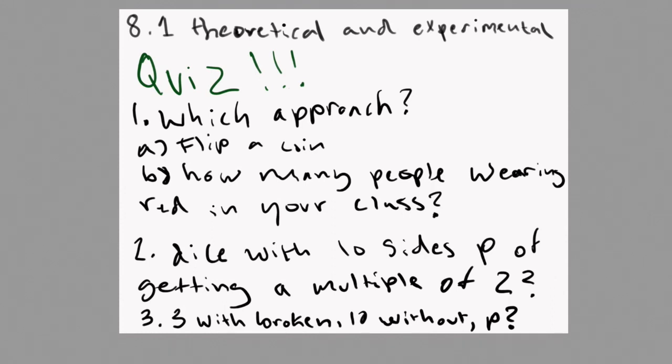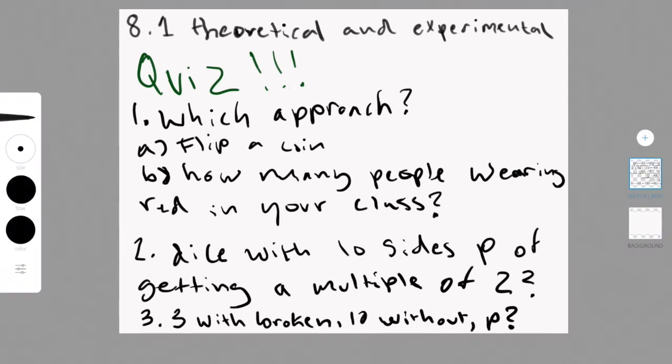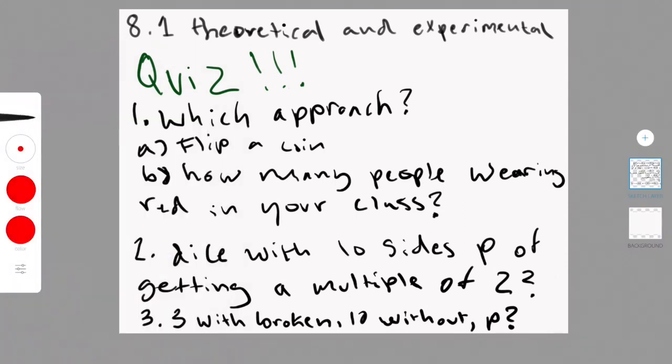The answer to 1a is theoretical because you know that there are two outcomes to flipping a coin. The answer to b is experimental because it is an unknown outcome. You don't know how many people in your class are going to wear red on any given day.